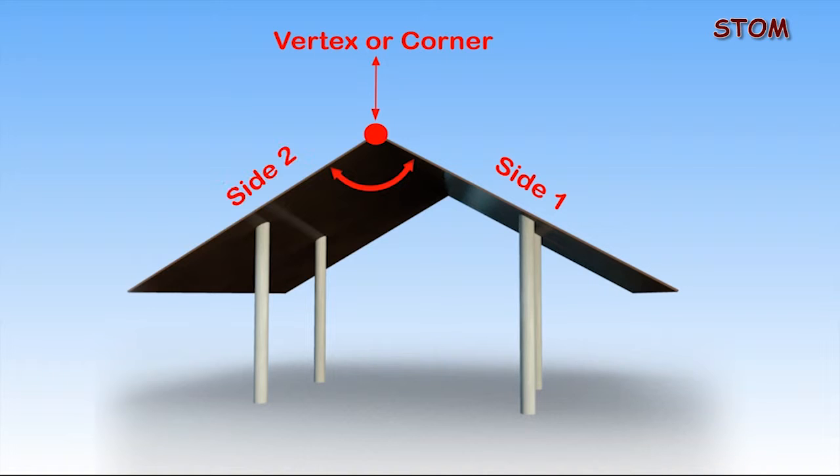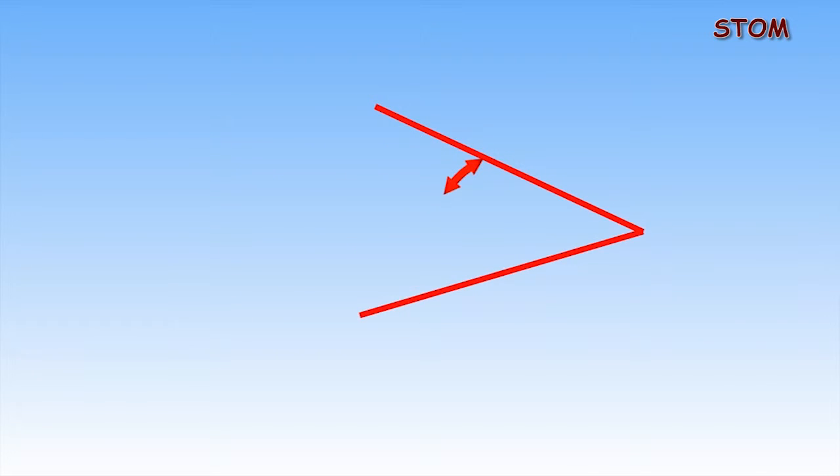In this illustration, we can see that an angle is formed where the two sides meet at the vertex. In this example, you can see that the angle is formed where the two lines meet at the corner.